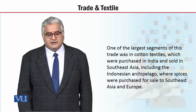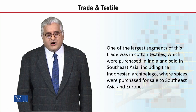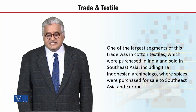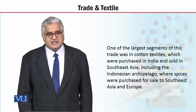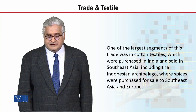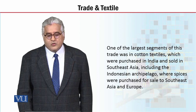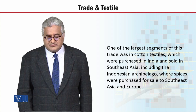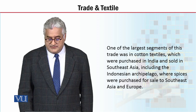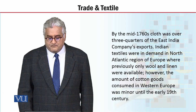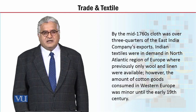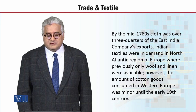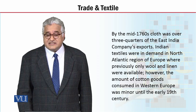One of the largest segments of this trade was in cotton textiles, which were purchased in India and sold in South East Asia, including the Indonesian archipelago, where spices were purchased for sale to South East Asia and Europe. You would be amazed to know that by the mid-1760s, cloth was over three quarters of the East India Company's export.